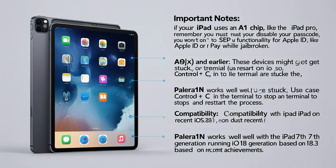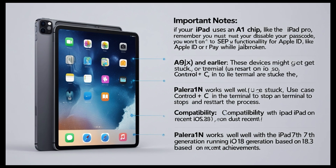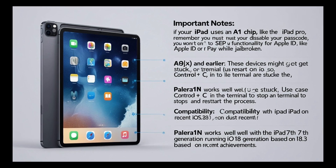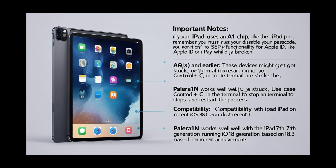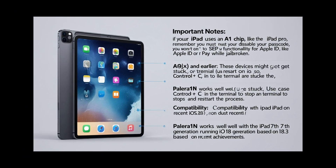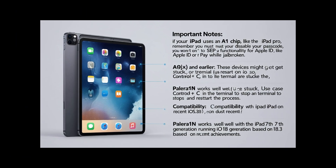Limitations: Polera 1n does not support devices with A12 or newer chips, as it uses the Checkmate exploit which is only effective on A5 to A11 chips.